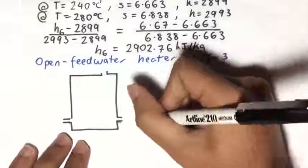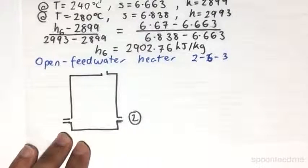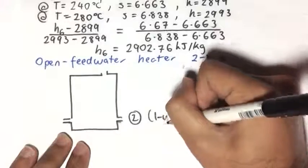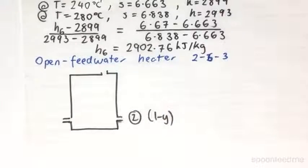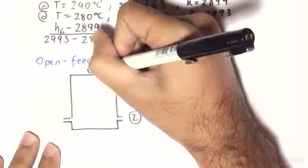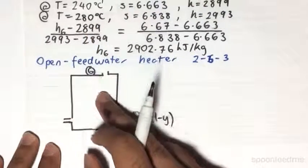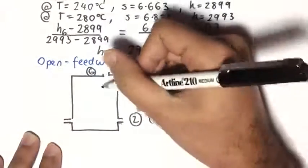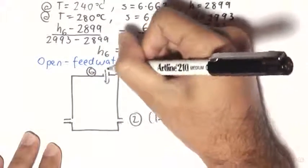The open feed water heater has the water from the pump entering at state 2, and that's going to have the fraction of 1 minus y of the mass flow rate. And similarly, there's going to be a superheated steam coming in from the turbine at state 6, and this is going to be the y fraction entering through here.